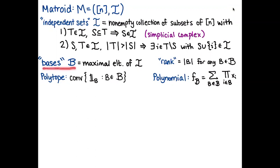This second exchange condition implies that all maximal independent subsets have the same size — these are called the bases of the matroid. Their common size is the rank. The matroid polytope is the convex hull of the indicator vectors of the bases. The associated polynomial is the basis-generating polynomial: for every basis we get a square-free monomial, and we sum them all up with coefficients one.